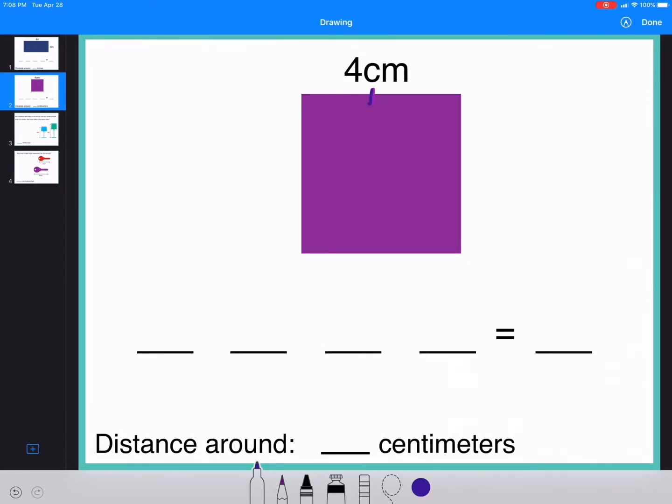So if this one's 4 centimeters, we have 4 centimeters, 4 centimeters, 4 centimeters, and 4 centimeters. If I want to know the distance around, so like a circle, I'm going around this shape, what did I say we needed to do? Add or subtract?